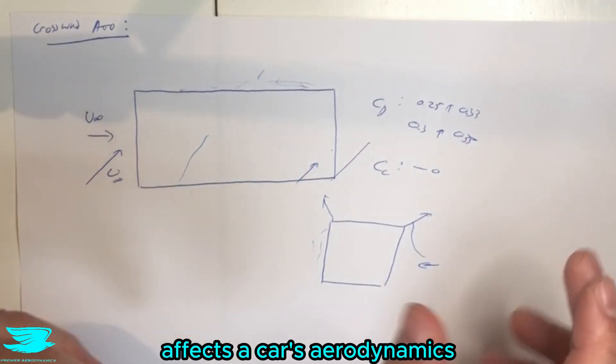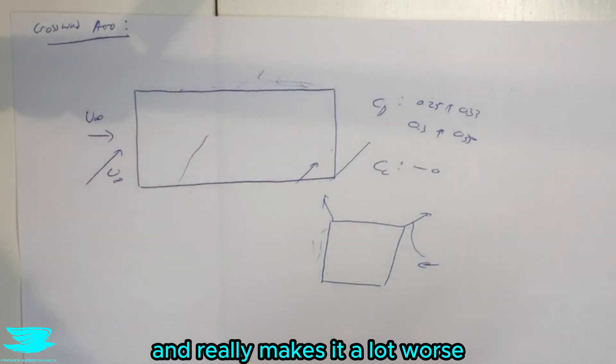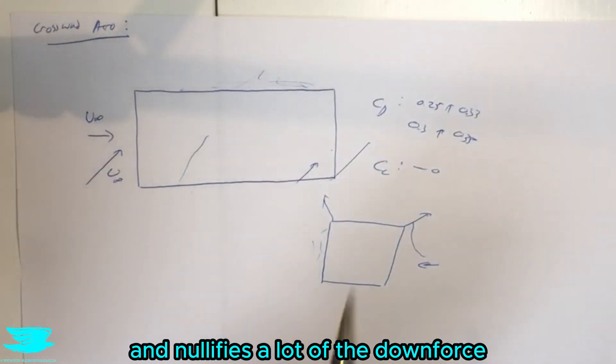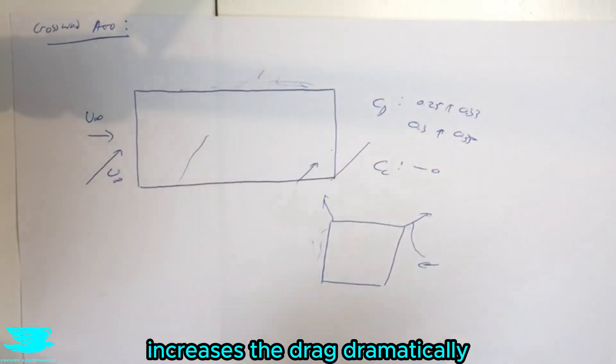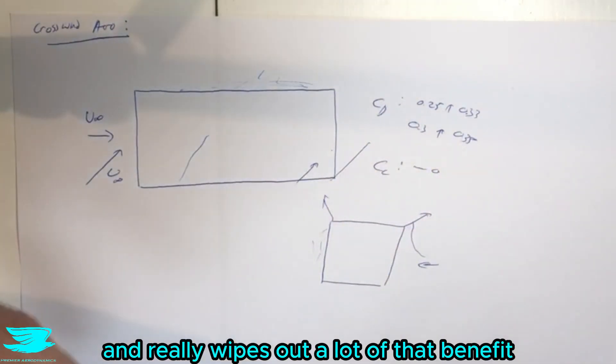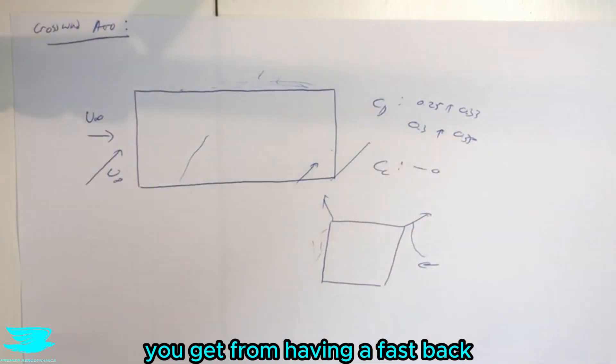So that is how a crosswind affects a car's aerodynamics and really makes it a lot worse. It nullifies a lot of the downforce and increases the drag dramatically and really wipes out a lot of that benefit you get from having a fastback compared to a squareback.